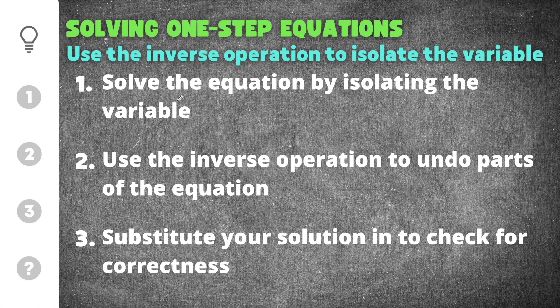The first thing you need to know is that in order to solve the equation you have to isolate the variable. What that means is you're trying to get the variable, which is typically the letter x, equal to a number. So you're trying to isolate the x on one side of the equal sign by itself.